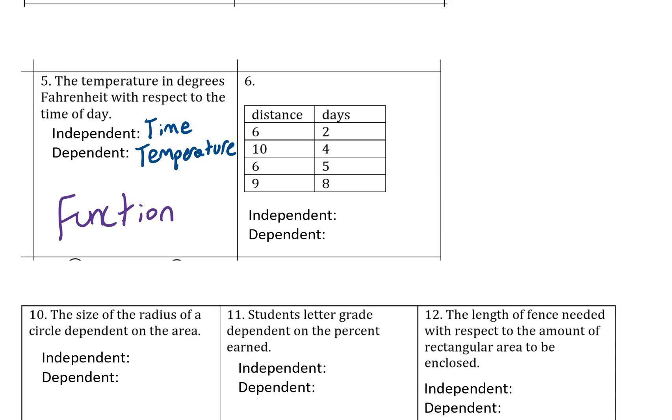And in number six, generally tables are given as X and Y. So our independent is distance and our dependent is days. So we don't have any other context but we can see that these two distances of six correspond with different days.